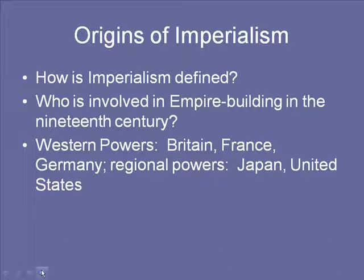The primary powers were Britain and France. The British Empire stretched all over the world — Africa, Asia. The same thing with France. The British had really the largest, most impressive empire. The French had a large empire in less desirable parts of the world. Germany was becoming a major imperial power in the 1880s and 1890s.